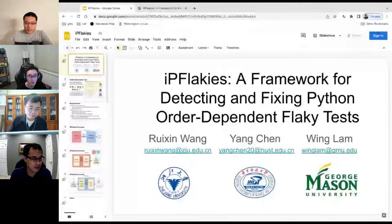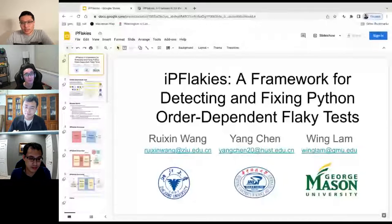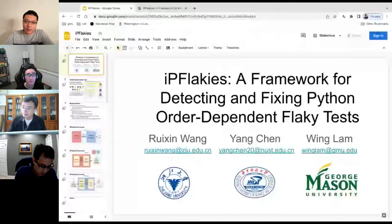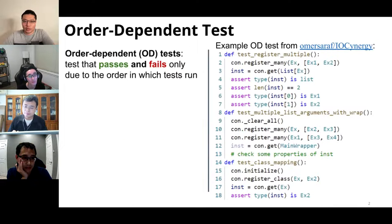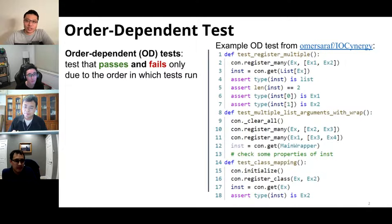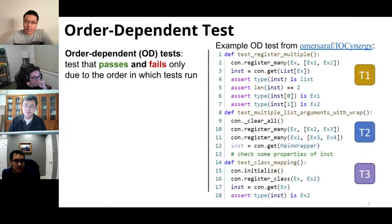Moving to the final presentation: Wing will present IP-Flakeys. IP-Flakeys is a framework for detecting and fixing Python order-dependent flaky tests. This work was done by two students, Ru Xin and Yang, and myself. Before getting into what the framework does, let's understand what order-dependent tests are: they are tests that pass or fail only due to the order in which the tests are run.